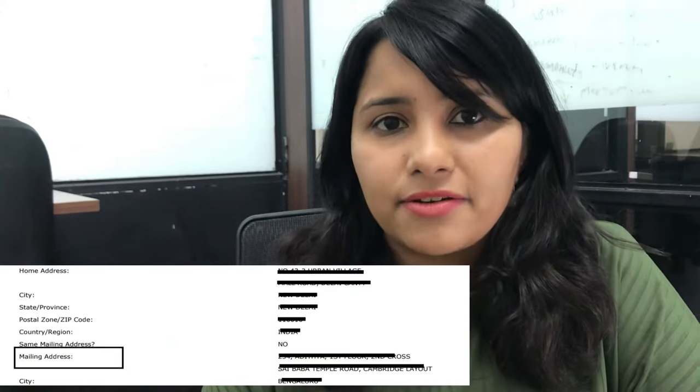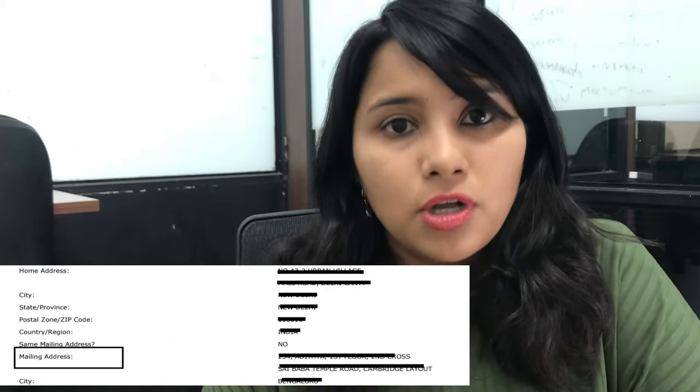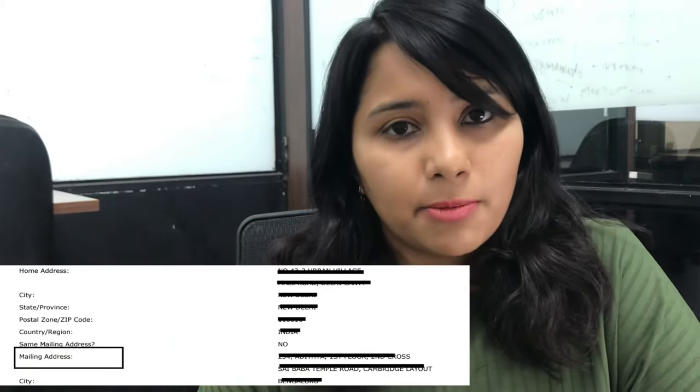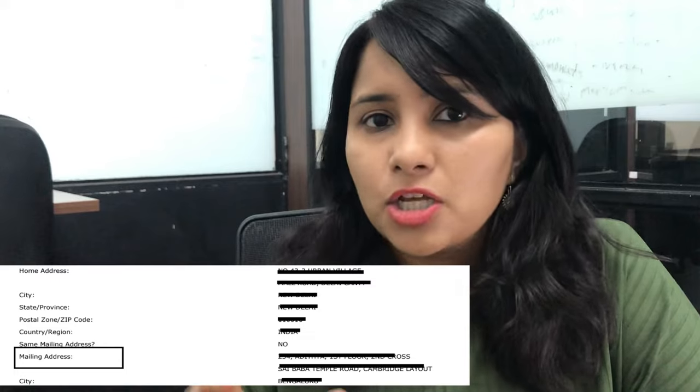The second address is the mailing address. This is basically the address where your passport will be sent to once it is stamped with the visa, so it can be the address where you currently live or it can even be your office address. Keep this very simple and make sure that you don't mess up with the addresses when you fill your DS-160.